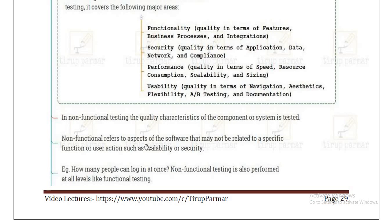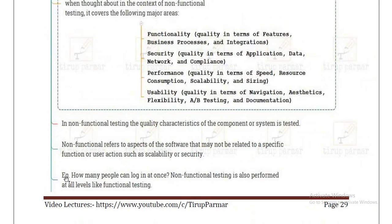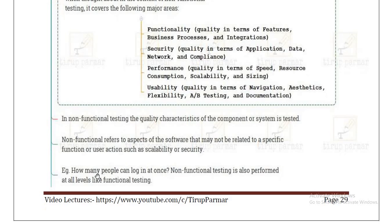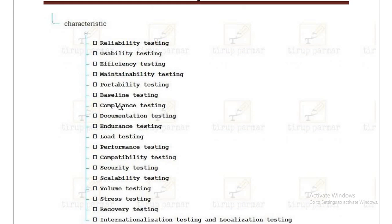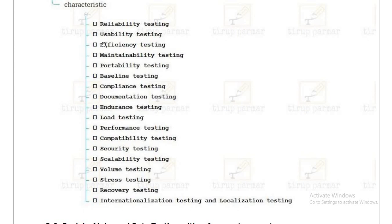Non-functional testing refers to aspects of software that may not be related to a specific function or user action, such as scalability and security — for example, how many people can log in at once. Non-functional testing is also performed at all levels, just like functional testing. Key characteristics to remember for exams include: reliability, efficiency, usability, and maintainability — meaning the software should be easily maintainable without requiring excessive effort from users.